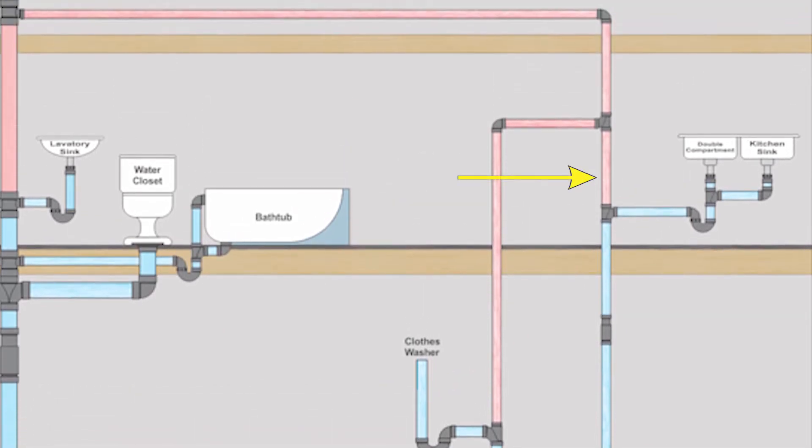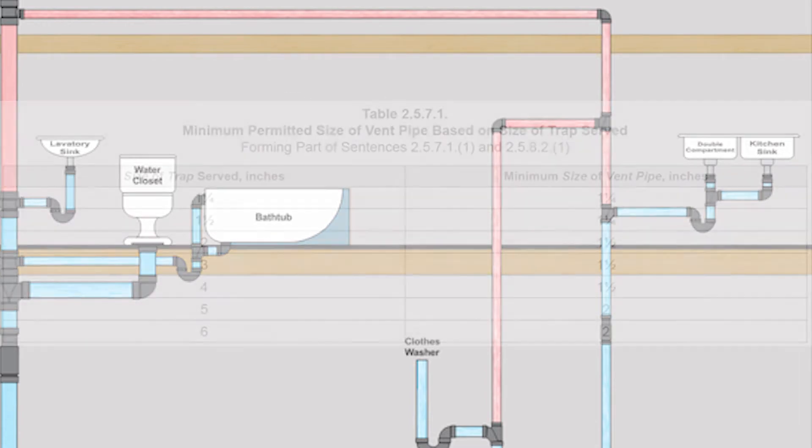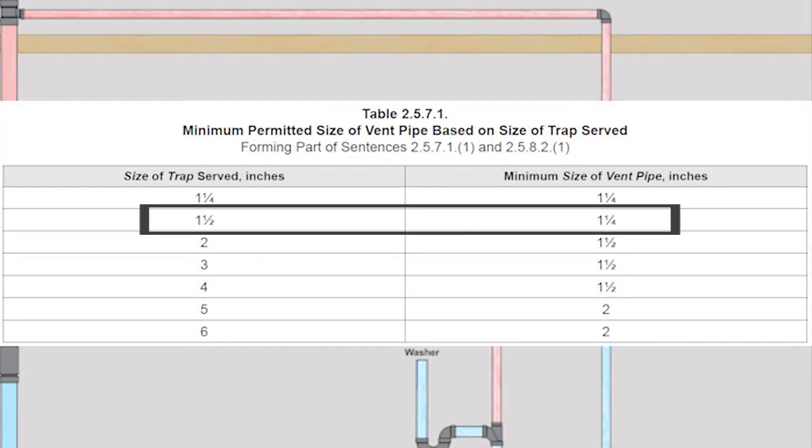Now let's look at this little vent pipe coming off the top of the soil away stack from the kitchen sink. Now that is called a stack vent. And we're gonna use table 2.5.7.1. We have a one and a half inch trap on the kitchen sink. Therefore we need a one and a quarter inch vent pipe.